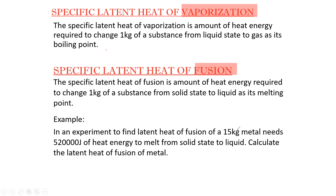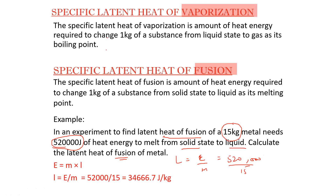Example: in an experiment to find the latent heat of fusion, a 15 kilogram metal needs 520,000 joules of heat energy to change from solid to liquid. Latent heat of fusion equals energy divided by mass: 520,000 divided by 15 equals approximately 34,667 joules per kilogram.